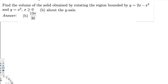Hey, what's going on guys? Let's do this problem. The question is asking: find the volume of the solid obtained by rotating the region bounded by y = 2x - x² and y = x³, where x is greater than or equal to 0, and this is rotating around the y-axis. We have to decide which method to use — we have the disk/washer method and the cylindrical shell method. Since the equations are already in terms of x, it's better to use the cylindrical shell method.